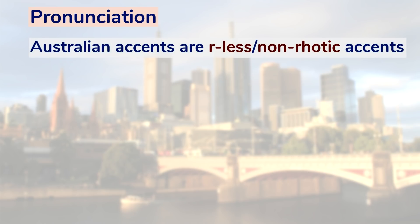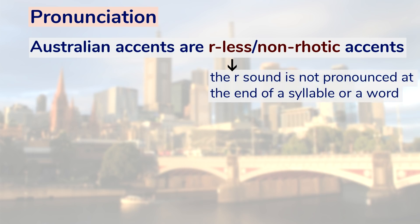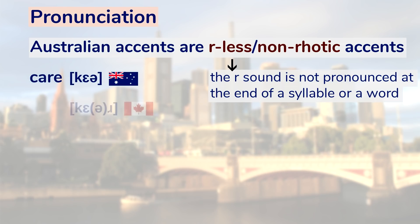Australian accents are R-less, or non-rhotic accents, meaning the R sound is not pronounced at the end of a syllable or word unless there's a word beginning with a vowel after it — the same as in most accents of England. Compare that to a rhotic Canadian accent: 'Care' vs. 'Care.' 'I don't care' vs. 'I don't care.'